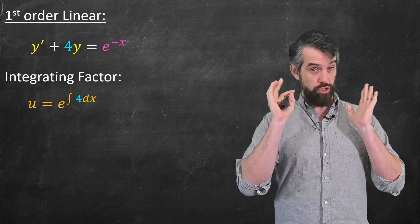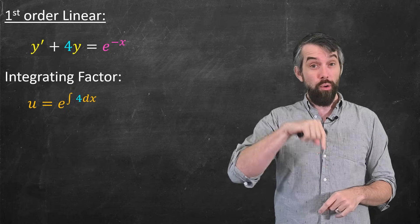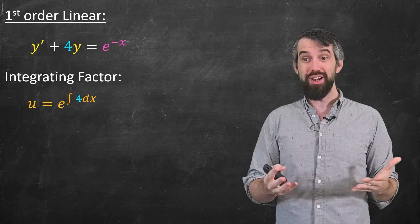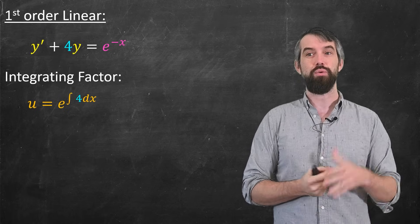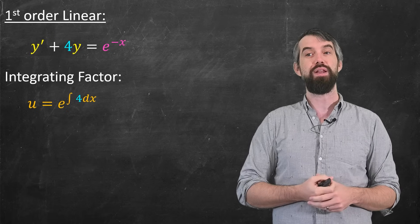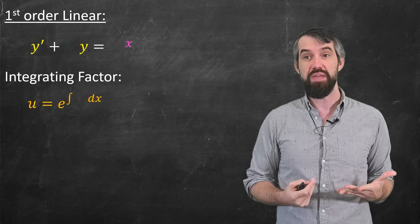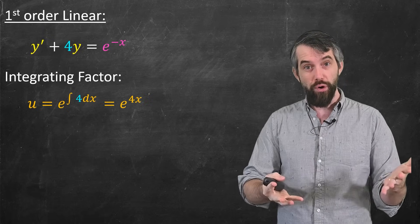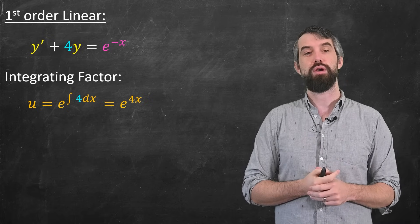The method here, again, I'll show it very briefly and for a slower explanation go down into the description, but the idea is we're going to come up with an integrating factor here. So it's always given e to the integral of, well, in this case I put 4, but in general it's whatever that p of x is. So e to the integral of 4 dx, e to the 4x in our case.